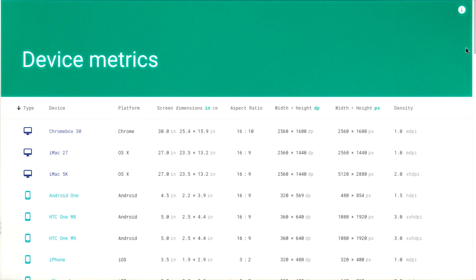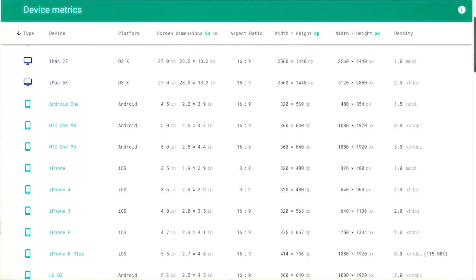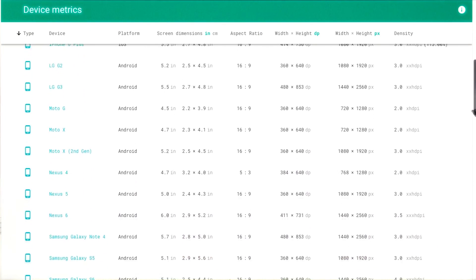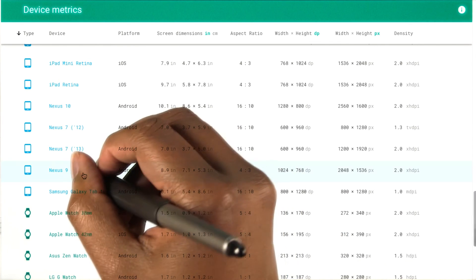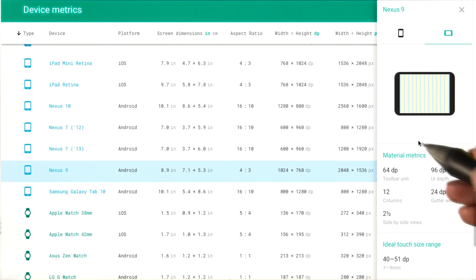Another good resource to use is the design metrics tool on the Google Design website. It lists the screen dimensions and densities for many popular devices in Android, iOS, Chrome OS, and Android Wear. Along with the UI designer in Android Studio, it's a good way to visualize how your design might need to change to fill up space on, say, a Nexus 9 in landscape mode.